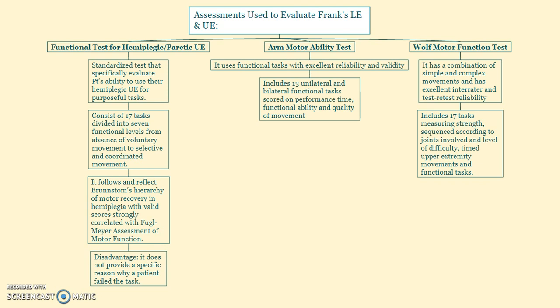The first is the Functional Test for Hemiplegic and Paretic Upper Extremity. This is a standardized test with about 17 tests divided into seven functional levels. It follows and reflects Brunnstrom's hierarchy of motor recovery in hemiplegia, with valid scores strongly correlated with the Fugl-Meyer Assessment of Motor Function.